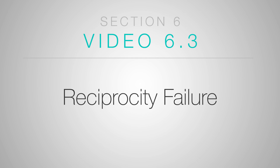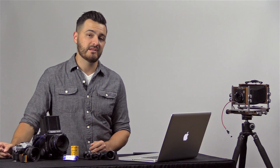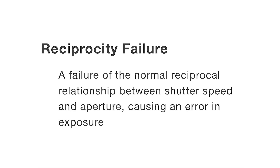When shooting film, especially at really long shutter speeds, there's a phenomenon you're likely to run into called reciprocity failure. Reciprocity failure is something you have to correct for, otherwise your exposures come out all wrong. So let's take a look at it. Reciprocity failure is a failure of the normal reciprocal relationship between shutter speed and aperture, causing an error in exposure.